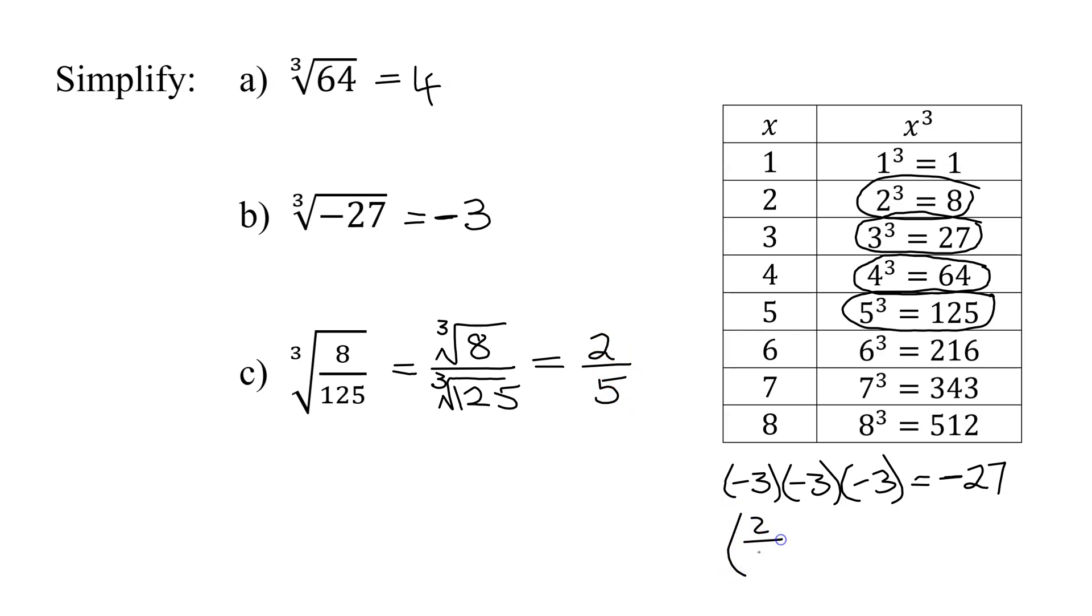Double check. If you have 2 fifths times 2 fifths times 2 fifths, what do I get? 2 times 2 times 2. So 2 times 2 is 4. 4 times 2 is 8. Over 5 times 5 is 25. Times 5 is 125. Is that what I had originally? Yes.